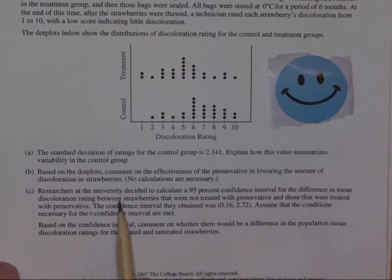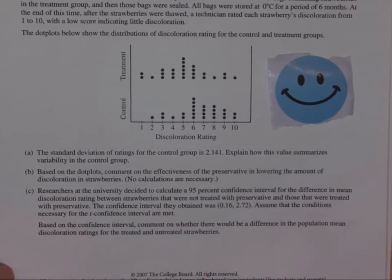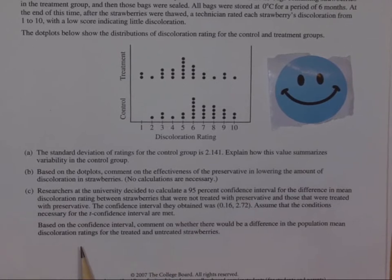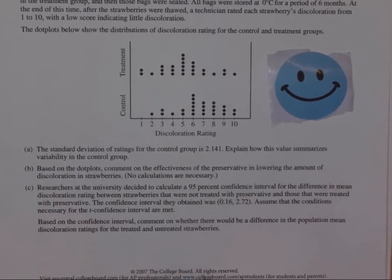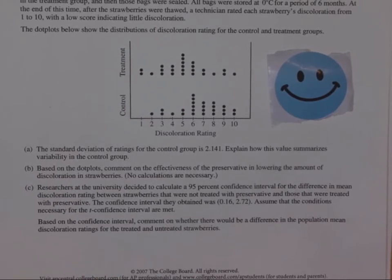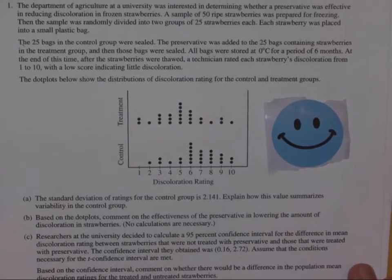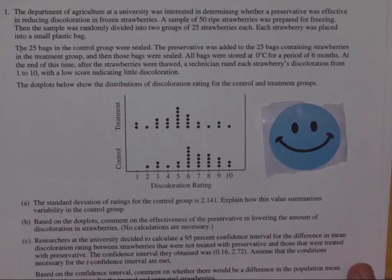And then part C, researchers at the university decided to calculate a 95% confidence interval for the difference in the mean discoloration rating between the strawberries that were not treated with the preservative and those that were treated with the preservative. The confidence interval they obtained was 0.16 to 2.72. Assume the conditions necessary for the T confidence interval are met. Based on the confidence interval, comment on whether there would be a difference in the population mean discoloration ratings for the treated and untreated strawberries. If you want to pause this video and give it a shot, that would be great.